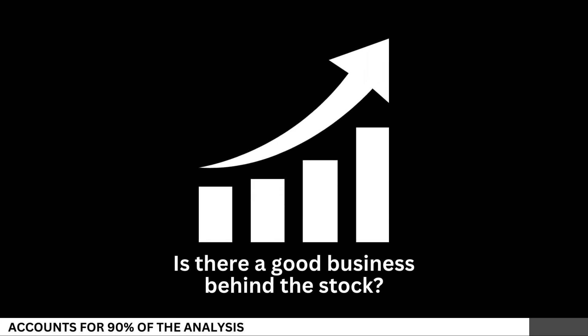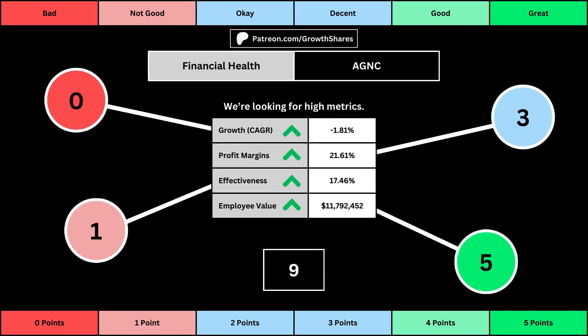We'll look at 14 metrics to determine the business fundamentals. The first set of metrics deal with the company's financial health, with its projected earnings growth for the next five years, its profit margins, its effectiveness — which looks at the company's returns on equity, assets, and invested capital — and then the employee value, which looks at how much value the average employee adds to the business. You can see the values for each of these metrics, as well as the point totals awarded in the bubbles.